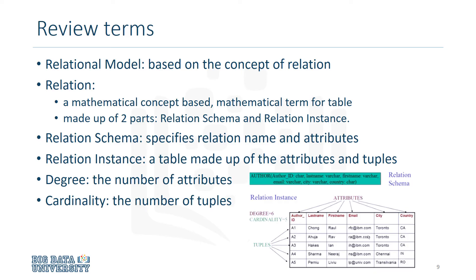A relation is made up of two parts: relational schema and relational instance. A relational schema specifies the name of the relation and the attributes. A relational instance is a table made up of the attributes or columns and the tuples or rows. Degree refers to the number of columns in a relation.